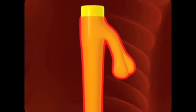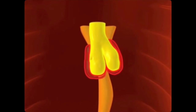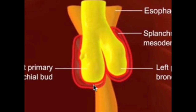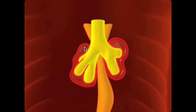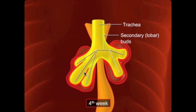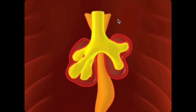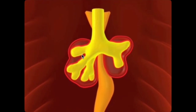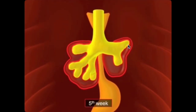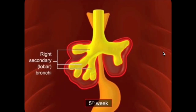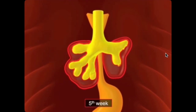The respiratory bud will branch into two primary bronchial buds, still covered by splanchnic mesoderm. By late week four, branching continues to form the secondary or lobar bronchial buds. By week five, the tracheoesophageal septum forms, and three secondary bronchial buds are present on the right and two on the left — corresponding to the three lobes of the right lung (superior, middle, and inferior) and the two lobes of the left lung (superior and inferior).